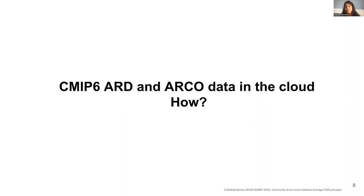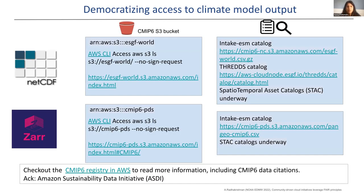Do we have any ARCO data sets in the cloud? Yes. Under the Amazon Sustainability Data Initiative, the ESGF Earth System Grid Federation and the Pangeo community worked together to publish CMIP6 datasets in the Amazon Cloud, both in NetCDF format (which is more or less analysis-ready) and ARCO datasets in Zarr. Origins were also done under another grant in Google as well. We also give you mechanisms to find that dataset and readily ingest it in your analysis — something called the intake ESM catalog, both human readable and machine readable, so you can quickly search through what's available and dive into your notebook analysis right away.